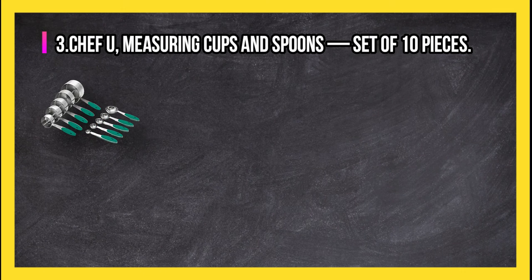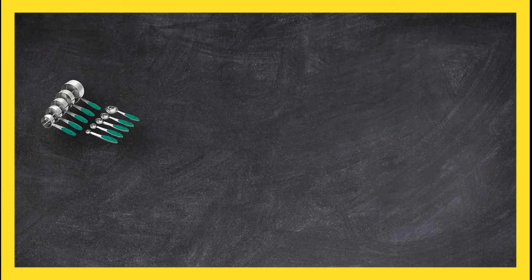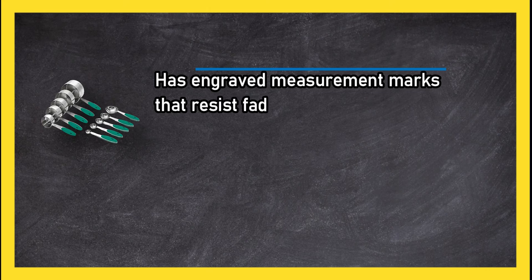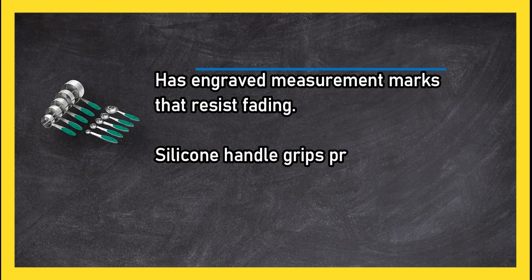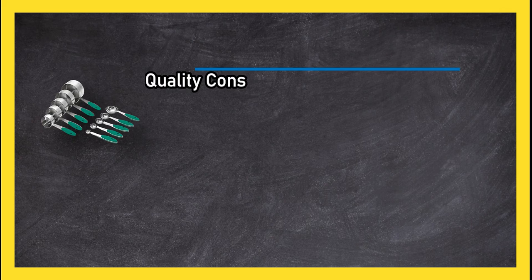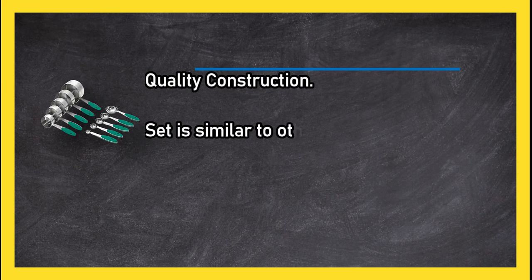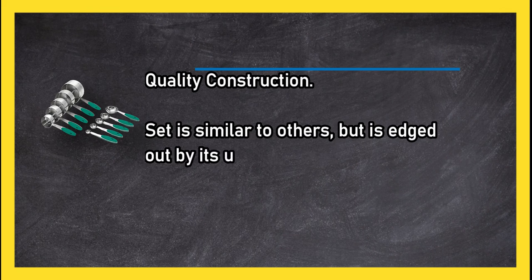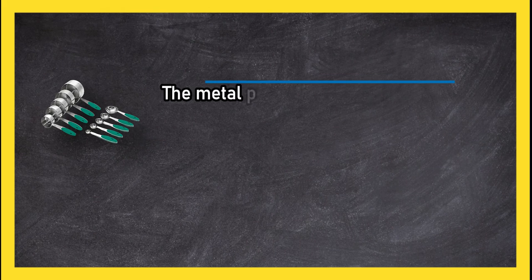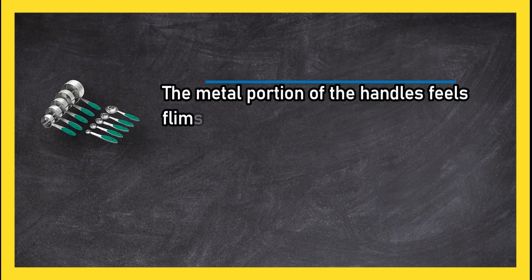At number three, Chefyu measuring cups and spoons set of ten pieces has engraved measurement marks that resist fading. Silicone handle grips prevent slipping. Quality construction: this set is similar to others but is edged out by its unbeatable quality. However, the metal portion of the handles feels flimsy and bendable.